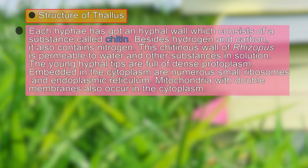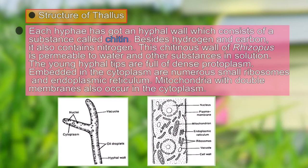Looking at the structure of the thallus, each hypha has a wall made of chitin, which contains hydrogen, carbon, and nitrogen. The chitinous wall of Rhizopus is permeable to water and dissolved substances. The young hyphal tips are full of dense protoplasm, and embedded in the cytoplasm are numerous ribosomes, endoplasmic reticulum, and mitochondria with a double membrane.